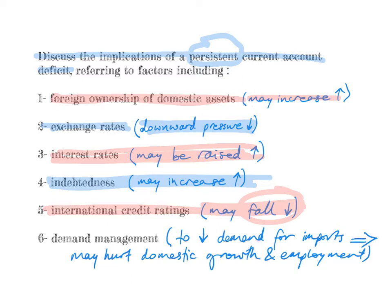Last but not least, it affects demand management, because in order to decrease demand for imports as a way of lowering this persistent current account deficit, the government may have to adopt policies to decrease aggregate demand overall, which would eventually decrease demand for imports, but this may hurt domestic growth and employment. So these are the six factors included in the IB Economic Syllabus as the implications of a persistent current account deficit.